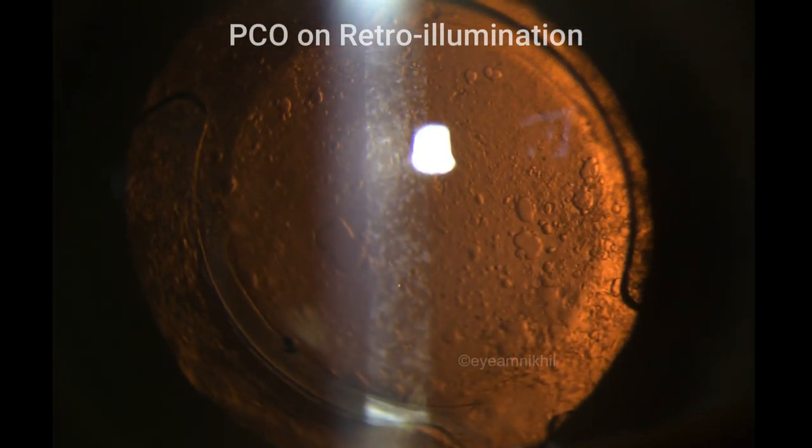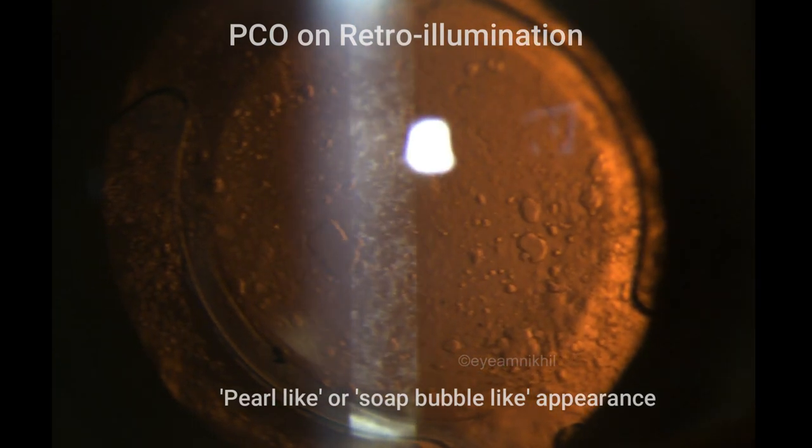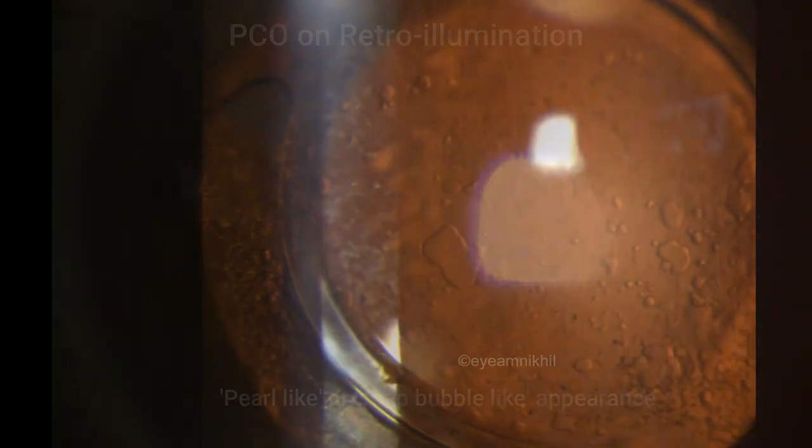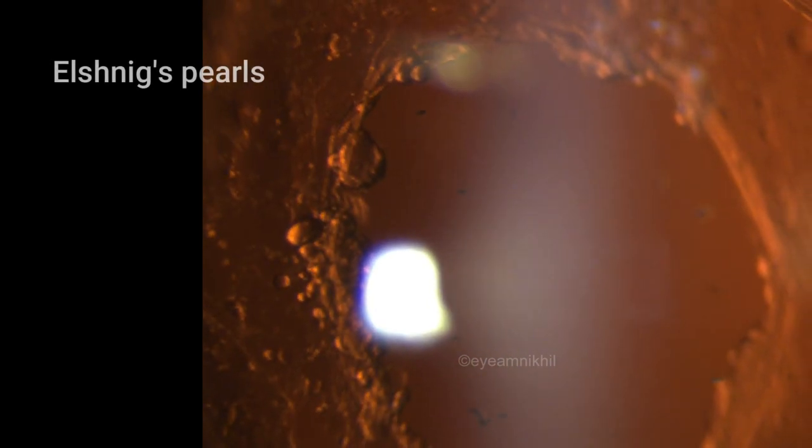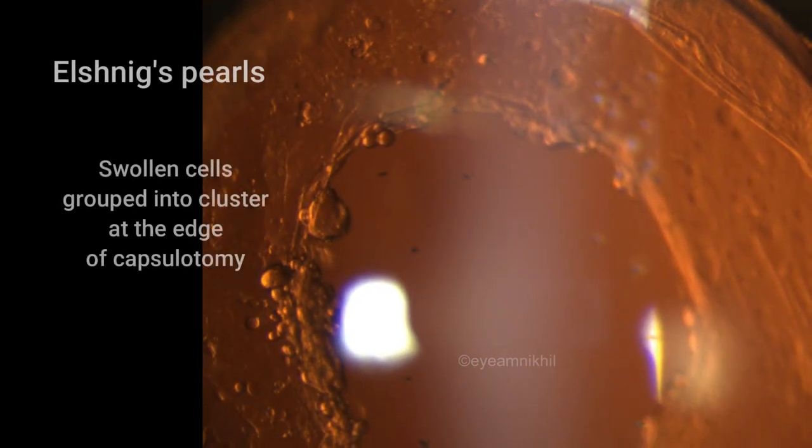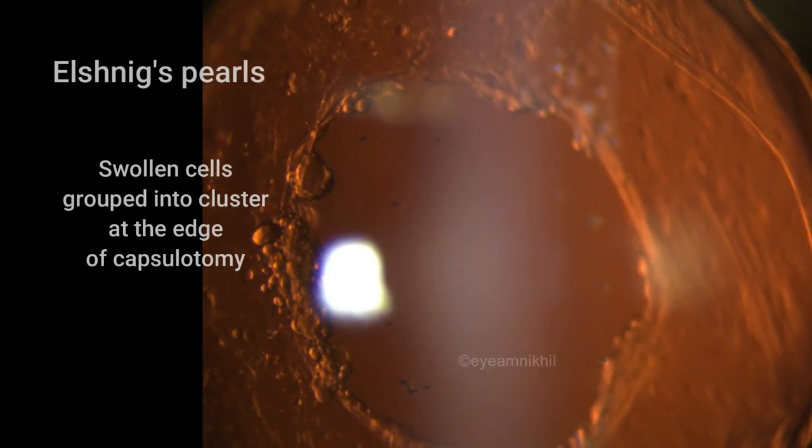The term Elschnig's pearl is particularly used when the swollen cells are grouped into a cluster at edge of capsulotomy.